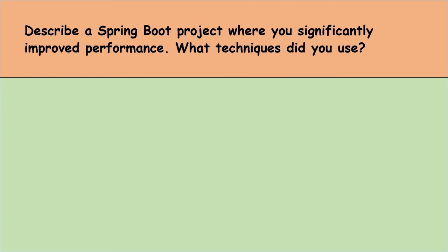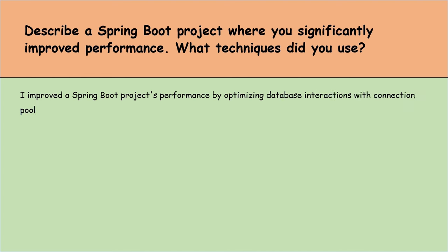Describe a Spring Boot project where you significantly improved performance. I improved a Spring Boot project's performance by optimizing database interactions with connection pooling and caching using EhCache. I also enabled HTTP response compression and configured stateless sessions in Spring Security to reduce data transfer and session overhead. I significantly reduced response times by using Spring Boot Actuator for real-time monitoring and adopting asynchronous processing for non-critical tasks, increasing the application's ability to handle more concurrent users and enhancing overall efficiency.